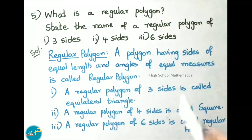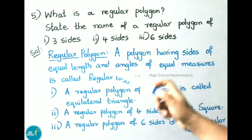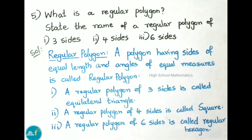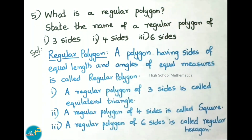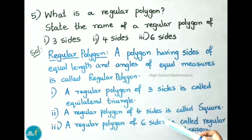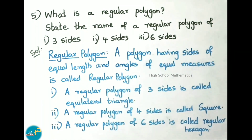Question number 5: what is a regular polygon? State the name of a regular polygon of 3 sides, 4 sides, and 6 sides. A polygon having sides of equal length and angles of equal measures is called a regular polygon. A regular polygon of 3 sides is called an equilateral triangle. A regular polygon of 4 sides is called a square. A regular polygon of 6 sides is called a regular hexagon.